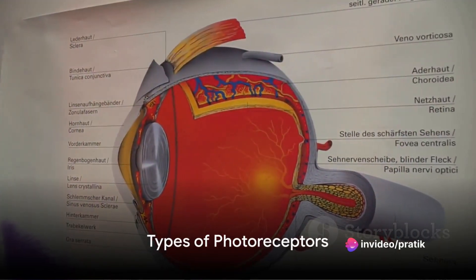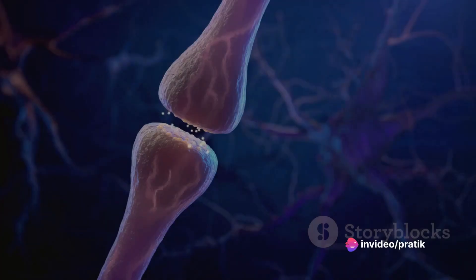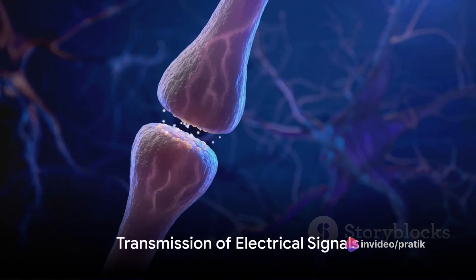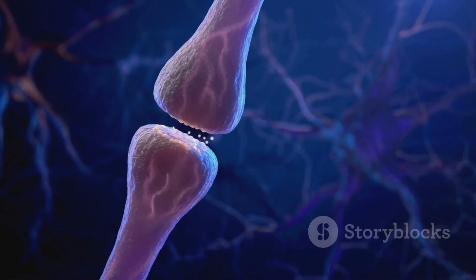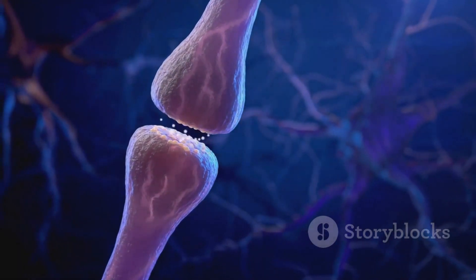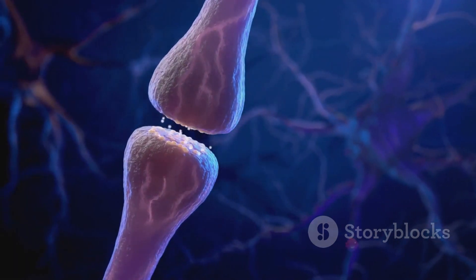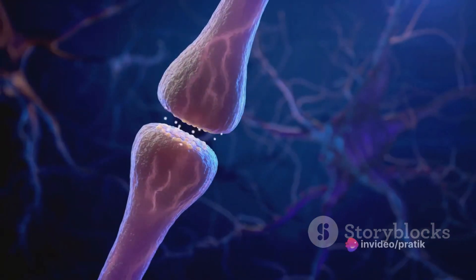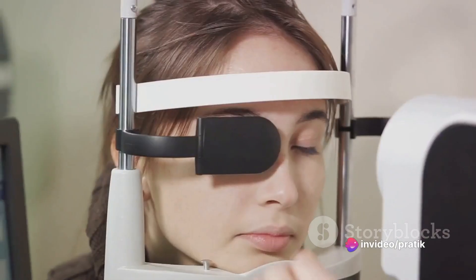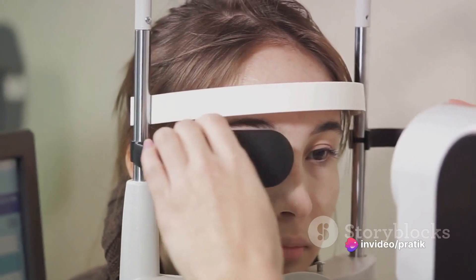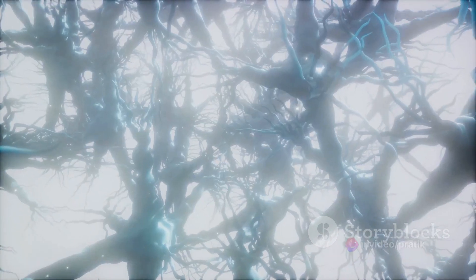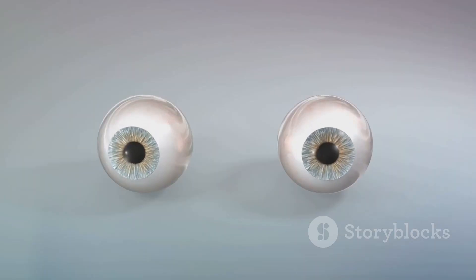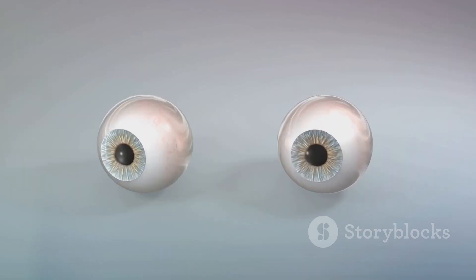There are two main types of photoreceptors in the retina. The electrical signals generated by the photoreceptors are transmitted through several layers of specialized neurons within the retina, ultimately converging on the ganglion cells. These ganglion cells send the visual information via the optic nerve to the brain, where it is processed and interpreted, resulting in our perception of the visual world.